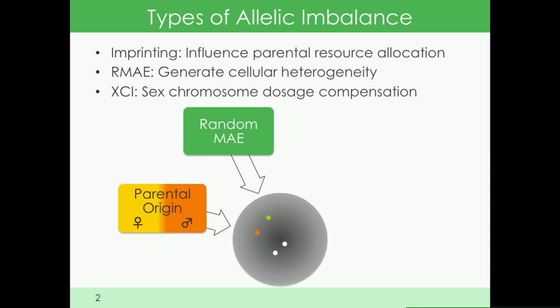There's also random monoallelic expression, of which X-chromosome inactivation is actually a subcategory because it depends on random monoallelic expression of the Xist gene, which then gets amplified to the rest of the chromosome. Its feature is that it's a stable epigenetic choice maintained throughout subsequent cell divisions.